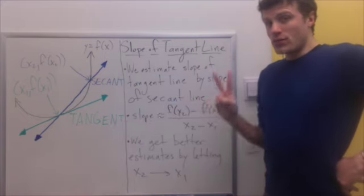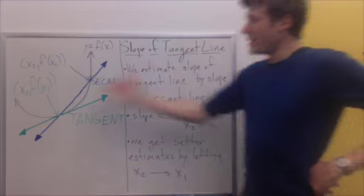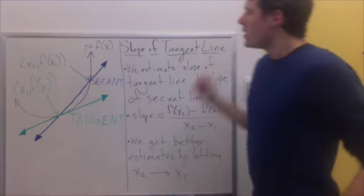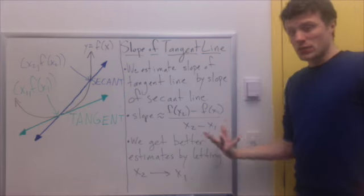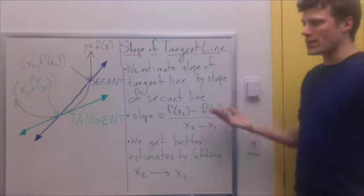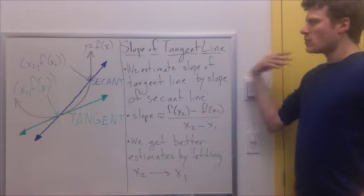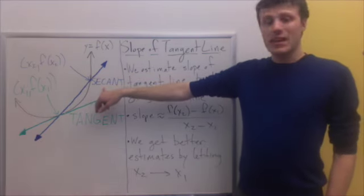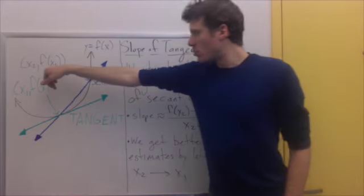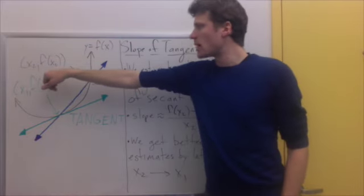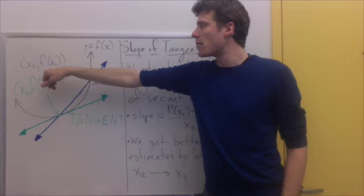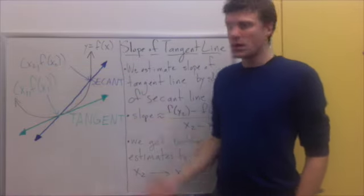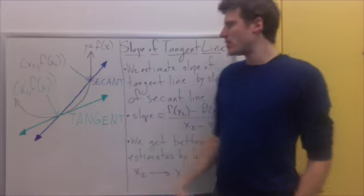How do we get the slope of a line? We need two points. The tangent line is defined by going through a single point — that's a problem. So in order to get a slope, we need to come up with a second point, which means we're going to be looking at some other line. This line that we're going to use to estimate the slope of the tangent line is called the secant line. We take another point on the curve, some value x2, and its y-coordinate will be f of x2. We draw the line between x1 and x2 — this blue line. That's our secant line, and it estimates the tangent line.